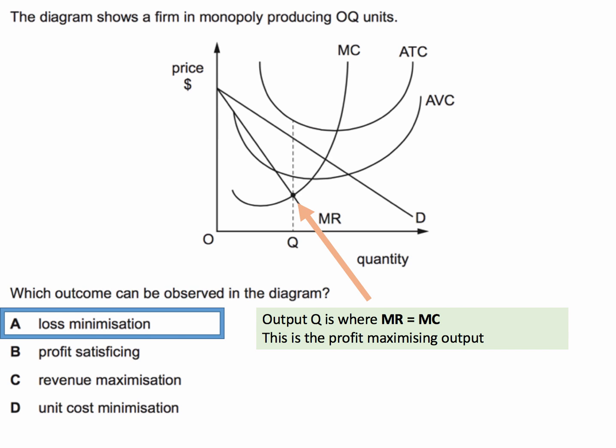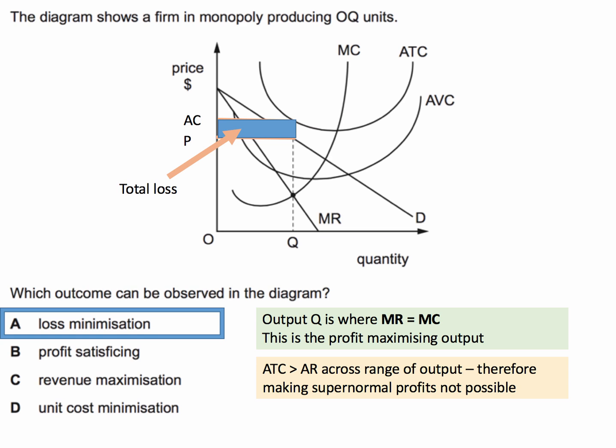We know that output OQ is where marginal revenue meets marginal cost, and that — hopefully you're familiar with — is the profit maximising output. But this firm cannot make a profit, because the demand curve, which is the average revenue curve, always lies below average total cost. So if we plot at output Q the average cost AC, and the price is P, therefore the firm is making a loss. Average cost is greater than average revenue across the whole range of output, and therefore making supernormal profits isn't possible.